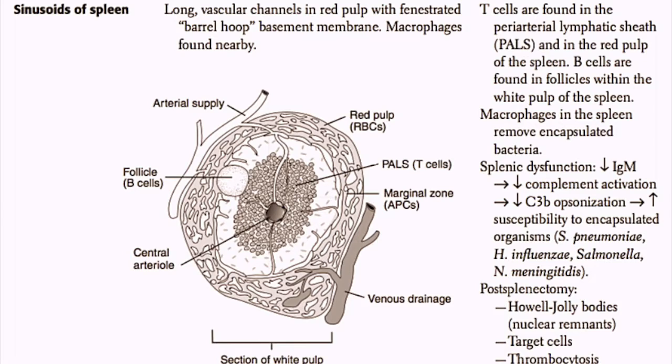Macrophages will remove encapsulated bacteria as well as filter other antigens. When you think of the spleen, you should automatically think of filtering encapsulated bacteria out of the blood. If you have splenic dysfunction, you have decreased IgM production. Without IgM, you have decreased complement activation through the classical pathway, leading to decreased opsonization due to less C3b, which increases susceptibility to encapsulated organisms. Remember the mnemonic — S-H-I-N: Salmonella, Strep pneumo, H. flu, and Neisseria meningitidis.